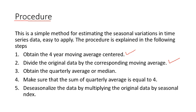Make sure the sum of the quarterly average is equal to 4. If it is equal to 4, then it's okay, then we move to our next step. If not, then we make seasonal adjustment. Then deseasonalize the data by multiplying original data by the seasonal index.